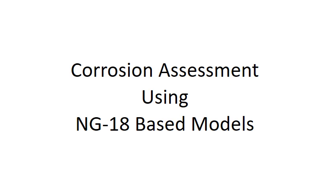Today's topic is going to be corrosion assessment using NG18-based models. Some of you might know these models better as ASME B31G or maybe DNV F101. Those of you that have studied these models or particularly done validation work will know that these models are generally accepted to be overly conservative. My estimate is that this over-conservatism is probably costing the oil and gas industry somewhere between maybe three and five billion dollars per year.